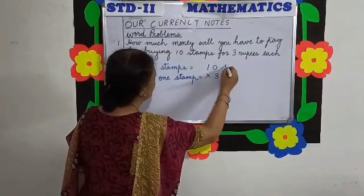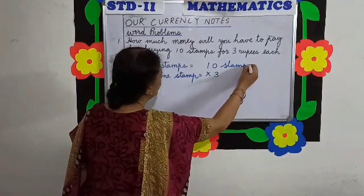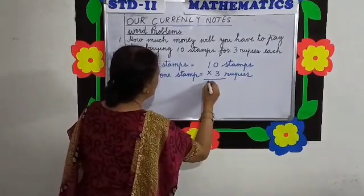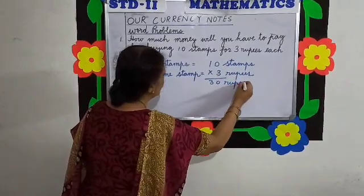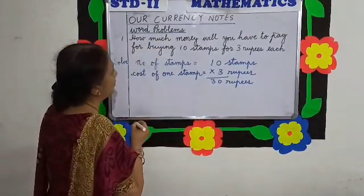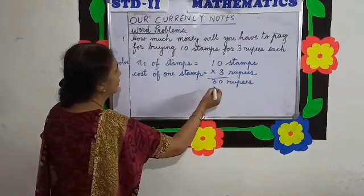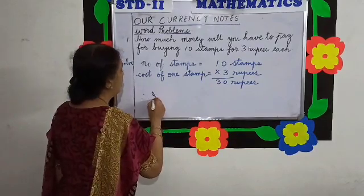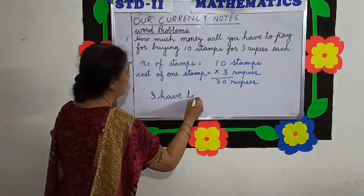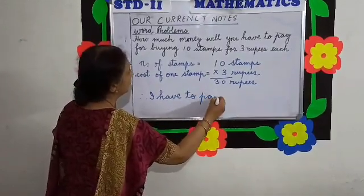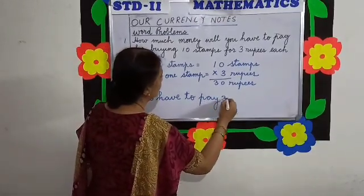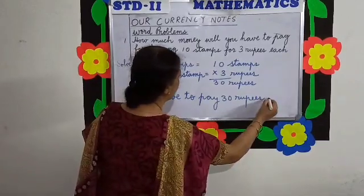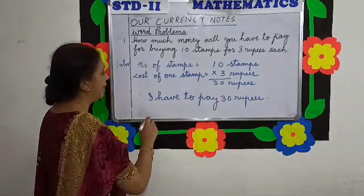So, 10 stamps at Rs. 3 equals Rs. 30. I am going to buy 10 stamps for Rs. 30. Therefore, statement: I have to pay Rs. 30.